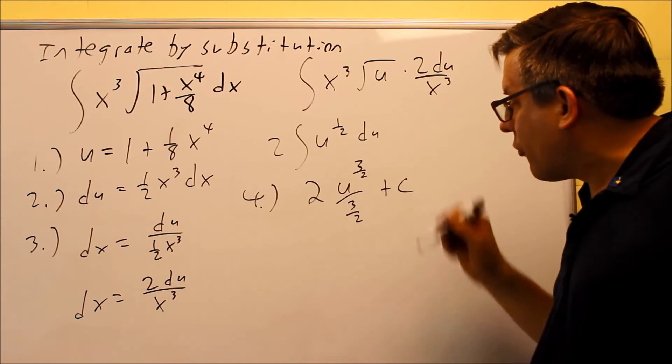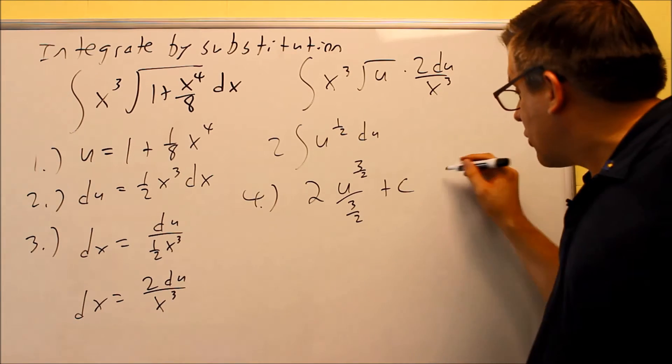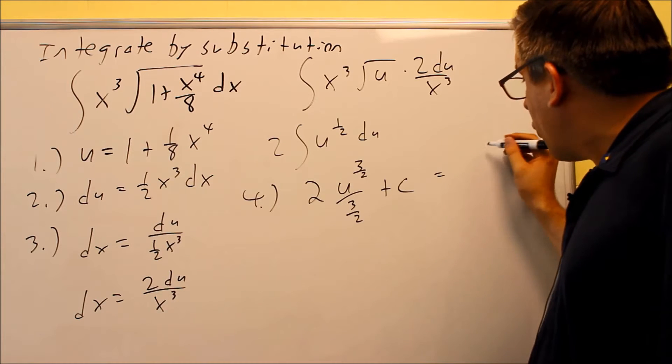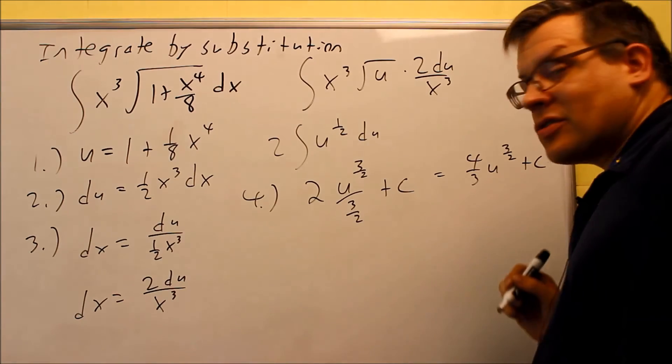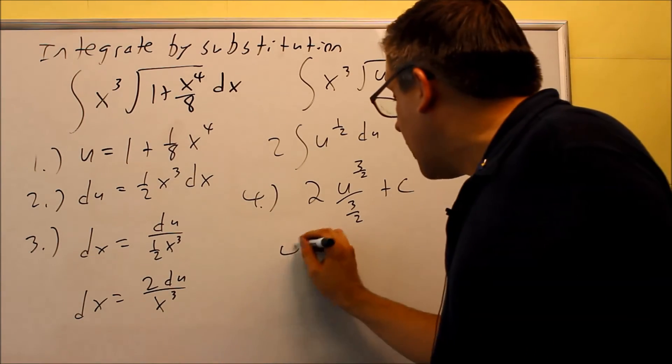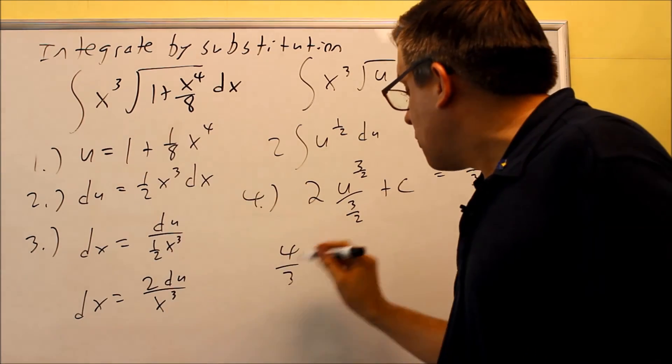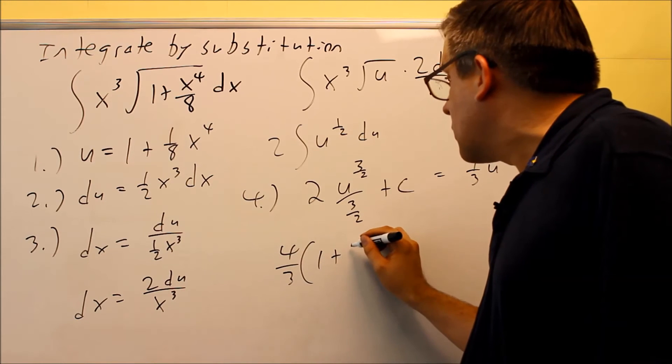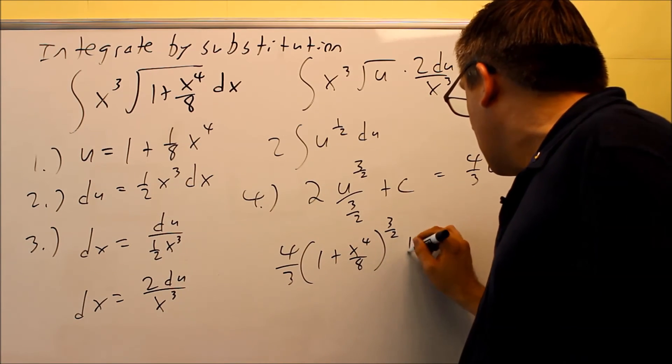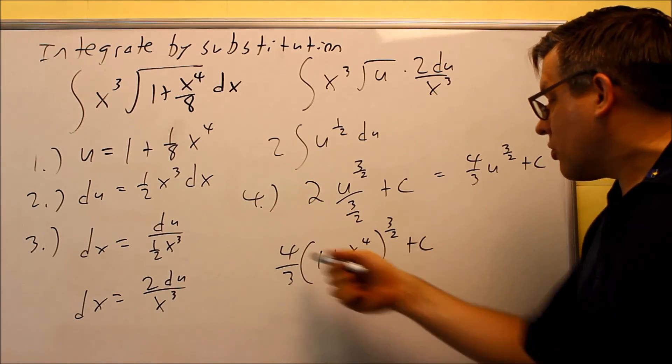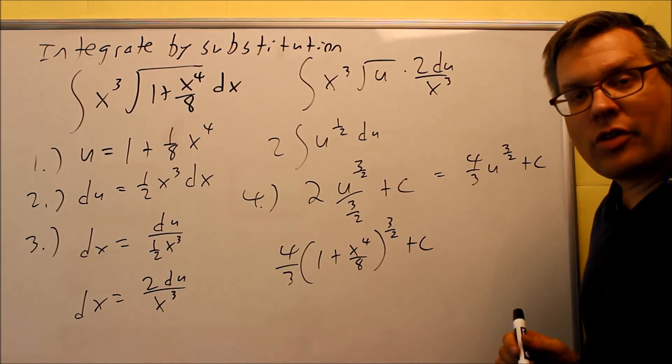We need to flip the fraction, so when we flip the fraction that's going to give us a 4 thirds, so 4 thirds u to the 3 halves plus c. And so then finally we'll just put the expression for u back in, 1 plus x to the fourth over 8, all that's raised to the 3 halves plus c, so this right here would be your final answer.